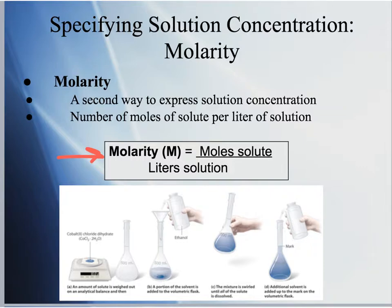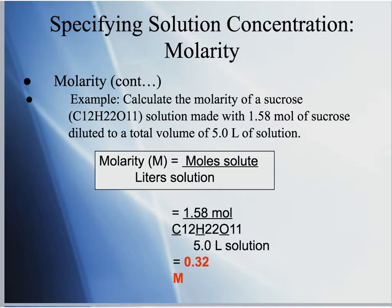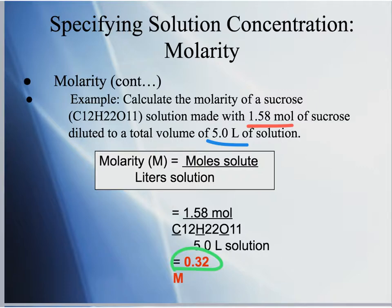Example: calculate the molarity of a sucrose solution made with 1.5 moles of sucrose diluted to 5 liters. Molarity is simply moles divided by liters: 1.5 ÷ 5 = 0.30 M. That's a pretty dilute solution — 1.5 moles in 5 liters is a large volume, so it won't be very concentrated.